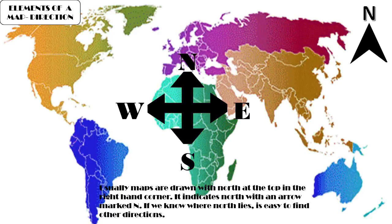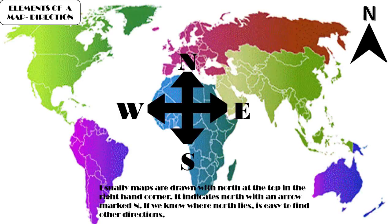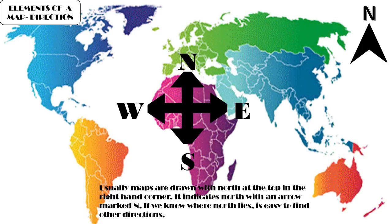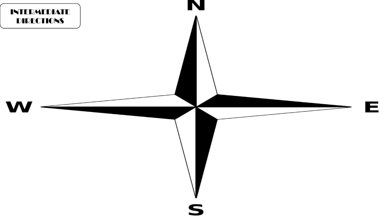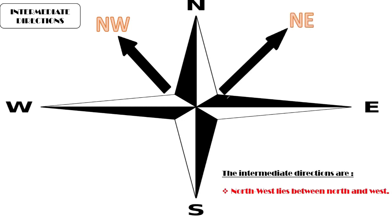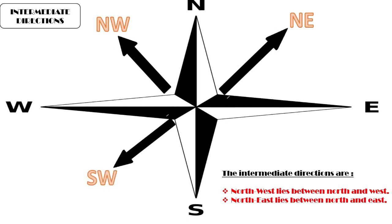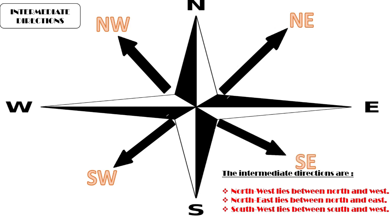When we know where north lies, it is quite easy to find the other directions. Other than the four cardinal directions, there are intermediate directions that lie between them: north-west lies between north and west, north-east lies between north and east, south-west lies between south and west, and south-east lies between south and east. So the four intermediate directions are north-west, north-east, south-west, and south-east.